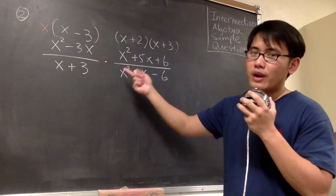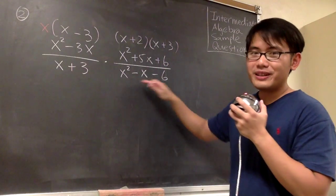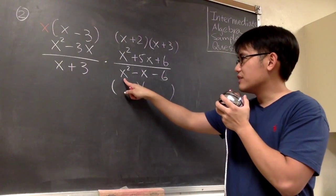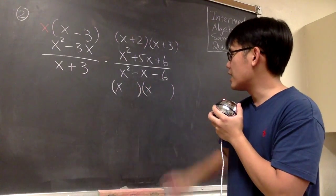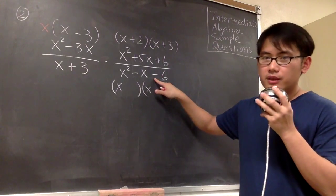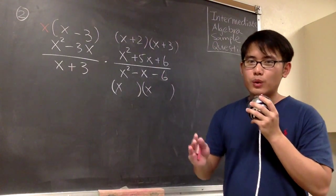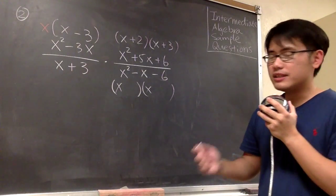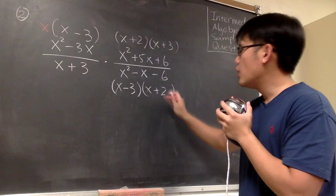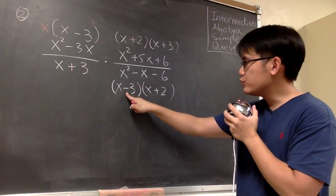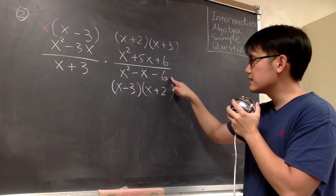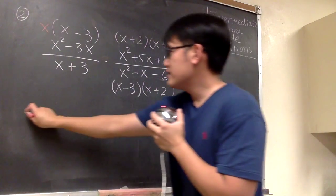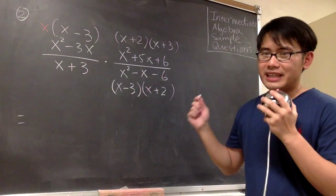Let's do another practice: x² - x - 6. Open two parentheses, x times x gives x². Now look at negative 6 — what times what gives negative 6 while they also add up to negative 1? The combination is negative 3 and positive 2. Negative 3 times positive 2 gives negative 6, and negative 3 plus 2 gives negative 1, so we know this is the correct factoring.